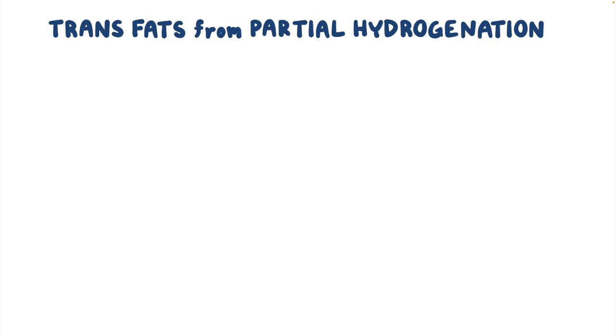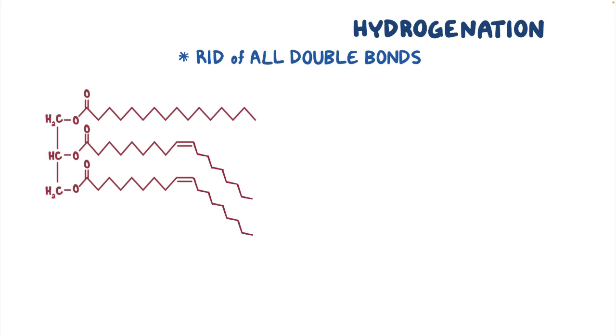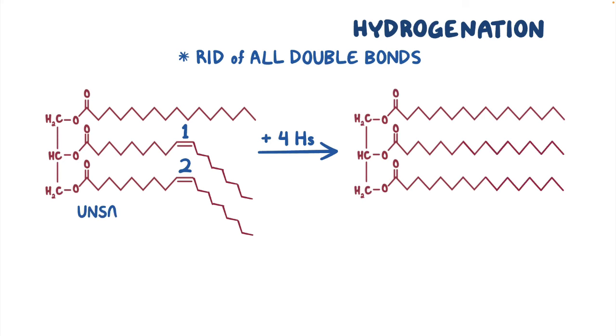Trans fats result from a process called partial hydrogenation. In just plain old hydrogenation, hydrogens are added to cis fats to get rid of all of the double bonds. So let's say that you've got this triglyceride, and it has a total of two double bonds. So in this case, we'd add four hydrogens, two for each double bond. That turns the unsaturated fatty acids with cis double bonds into saturated fatty acids.